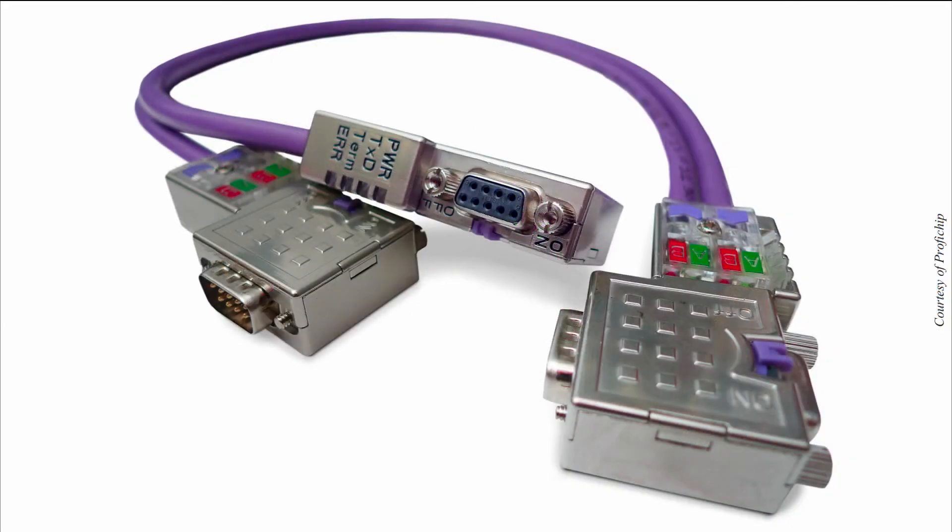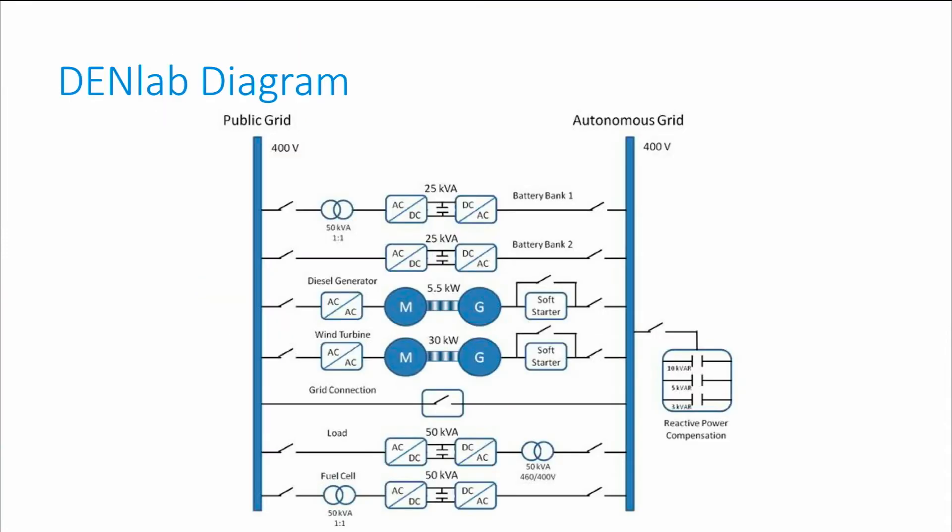Let's see now how the control is applied to DENLAB. In your screen, you will see a diagram of DENLAB. As mentioned before, the PLC sends the control commands to the power converters, according to the control algorithms that were implemented in the main computer and that are executed by the PLC. The currents that flow to the autonomous grid in DENLAB represent the currents that would flow in an analogous physical system.